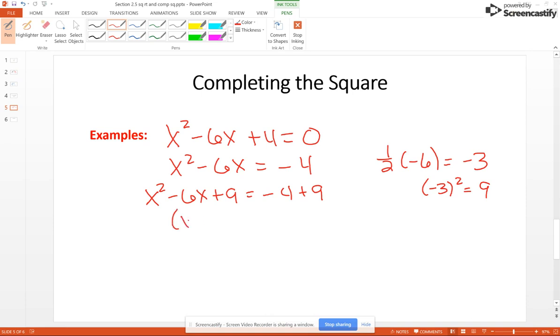And now the left side of this equation is a perfect square trinomial, which means it is extremely factorable. You get x minus 3 all squared. And over here, of course, you get 5. And you use the square root principle and add 3 to both sides. And you get x equals 3 plus or minus the square root of 5.